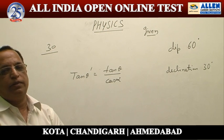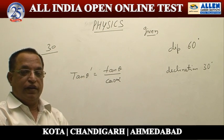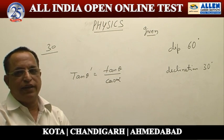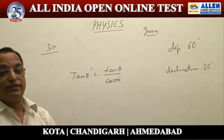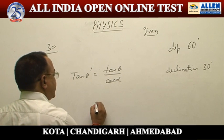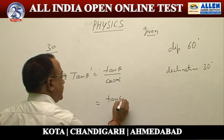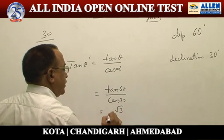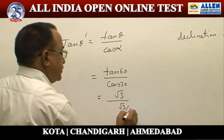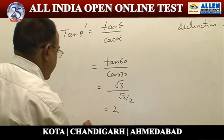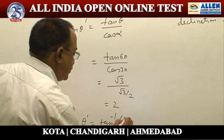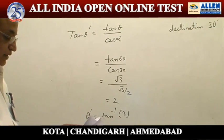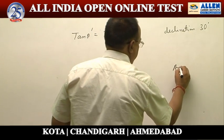The other plane given in the problem is the geographical meridian, and the angle of declination is 30 degrees. That means the other plane makes 30 degrees with the magnetic meridian, so α = 30°. Putting this into the relation: tan θ' = tan 60° / cos 30° = √3 / (√3/2) = 2. So θ' = tan⁻¹(2), and the answer is option 2.